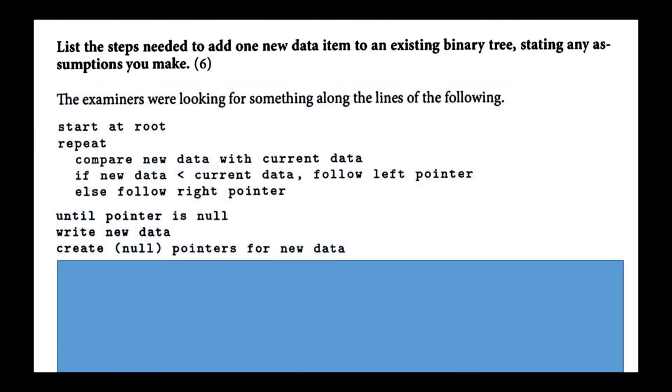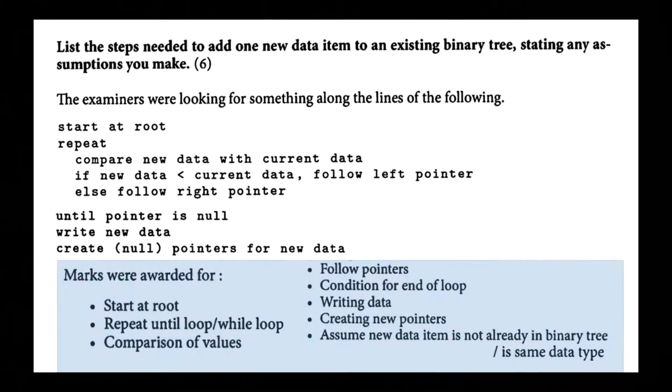So the answer is you start at the root you repeat this the compare new data with current data if new data is less than current data follow left pointer else follow right pointer then you repeat that until pointer is null so then you write new data then you create a new null pointer for the new data. So the marks that you'll be awarded are you start at root there's a repeat until loop there's the comparison of values follows pointers condition for end of loop write in data.